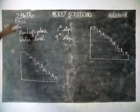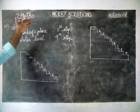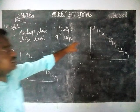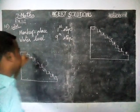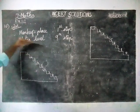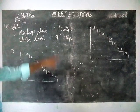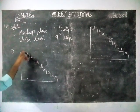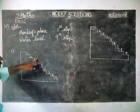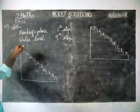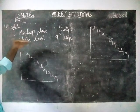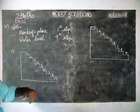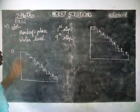In this question, a monkey is standing on the water tank and is sitting on the first step. The water level is at the ninth step. It is jumping three steps down and two steps back again. So at how many jumps will it reach the water level?